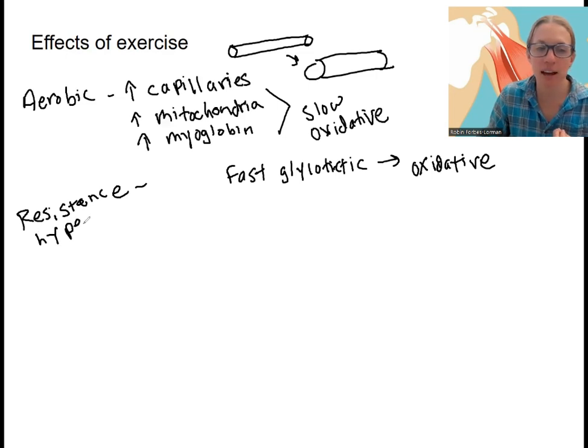The opposite of atrophy that happens in people who can't exercise, maybe they're old or sick or on a spaceship. So these individuals would have increased size of the fibers, especially fast glycolytic, and a high fast glycolytic ratio.